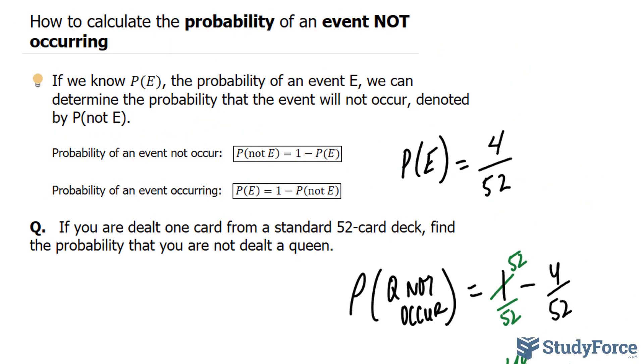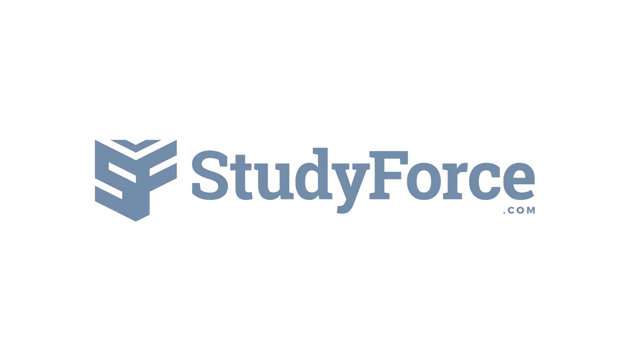And there you have it. That is how to calculate the probability of an event not occurring.